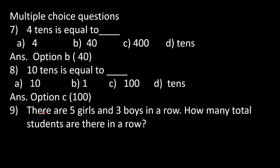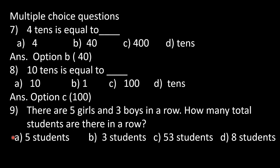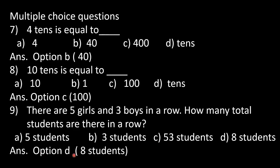In question number 9: there are 5 girls and 3 boys in a row. How many total students are there? Keep 5 in your mind and 3 on your fingers, then count: 6, 7, 8. Our answer is 8 students, so option D is correct.